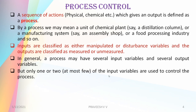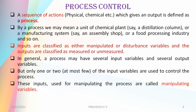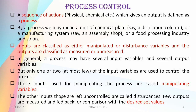Only one or two of the input variables are used to control the process — it depends on the particular application. The variables used to manipulate the process are called the manipulated variables. Those that are left uncontrolled are called disturbance variables. So the manipulated variables are the ones used for manipulating, and the disturbance variables are the ones left uncontrolled.